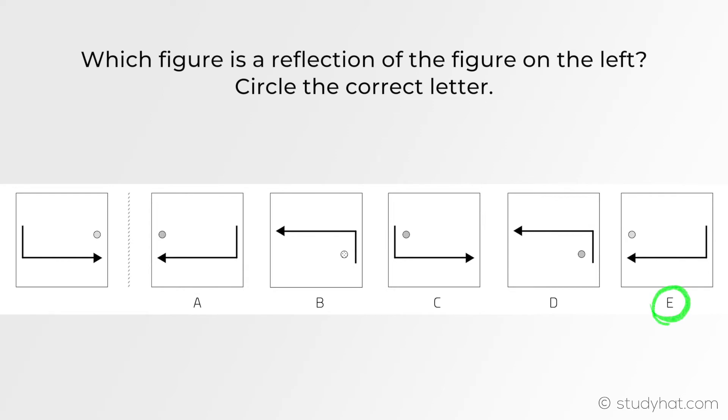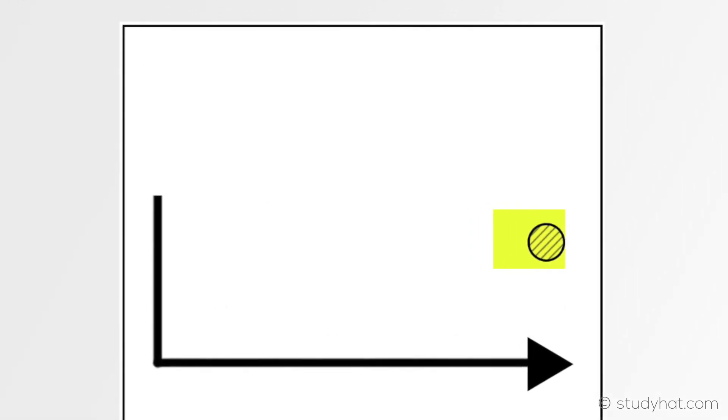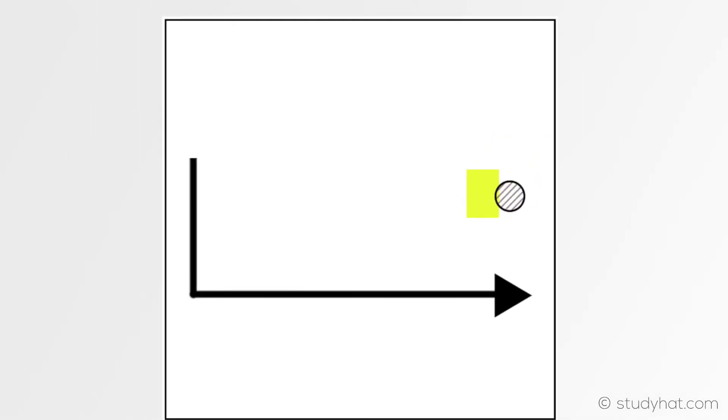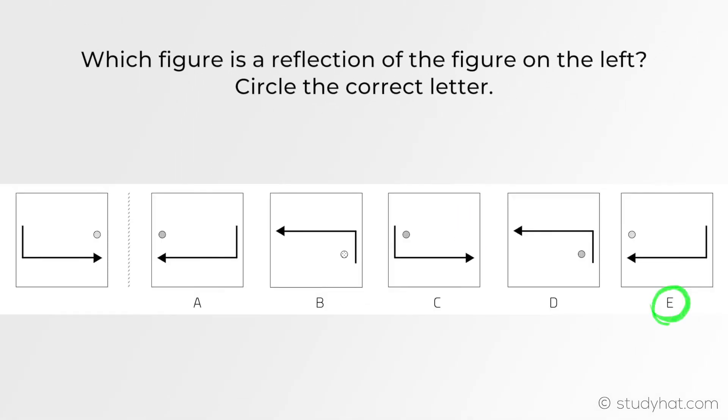Alright the answer is E. If you got that one then well done for looking closely at the pattern on the reflection. If you didn't already spot that the question has a diagonal line inside of the circle when reflected this diagonal line also changes as it's part of the figure therefore making E the correct answer.